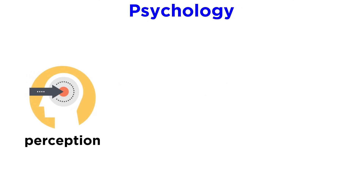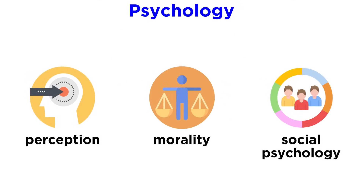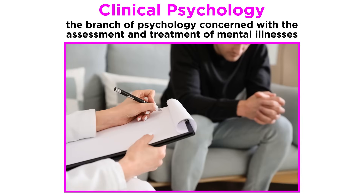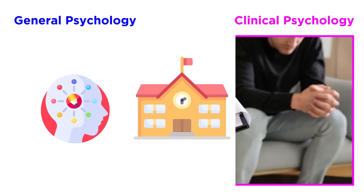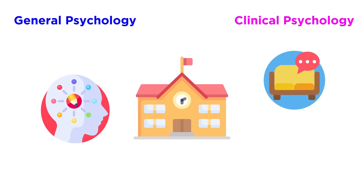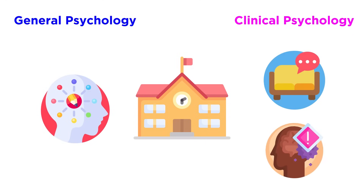We've covered a variety of topics in this series, such as perception, morality, and social psychology, to name a few. One thing we haven't talked a lot about yet is the realm of clinical psychology. This branch of psychology is concerned with the assessment and treatment of mental illnesses. In many schools, general psychology and clinical psychology are completely separate programs. General psychology researches a lot of different topics, while clinical psychology tends to be much more focused on training therapists to help people and researching mental illnesses.